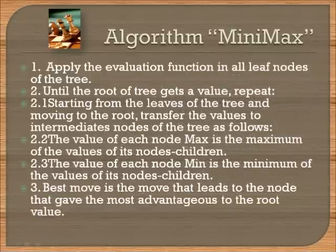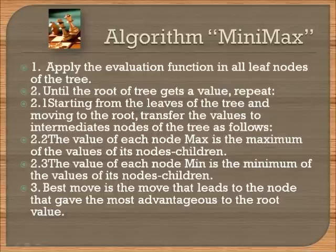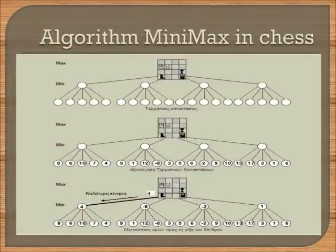The steps for Minimax are as follows: First, apply the evaluation function to all leaf nodes of the tree. Then, until the root of the tree gets a value, repeat — starting from the leaves and moving to the root, transfer values to intermediate nodes. The value of each max node is the maximum of its children's values; the value of each min node is the minimum of its children's values. The best move is the move that leads to the node giving the most advantage to the root value. We will now watch an animation for the Minimax algorithm.